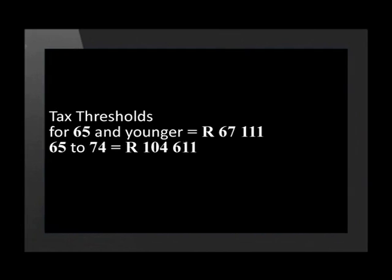For 65 to 74 years of age, the threshold is 104,611 rand. And lastly, for 75 year olds and older, the threshold value is 117,111 rand.